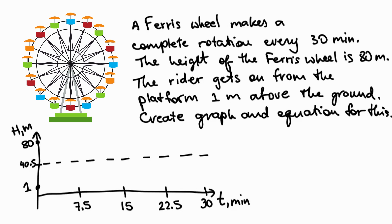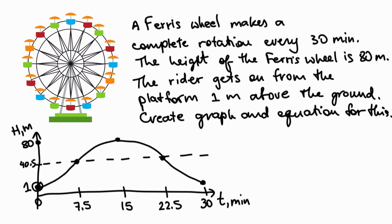The rider gets on at the bottom at time zero, so the lowest height is 1 meter. After 30 minutes the rider returns to the same position. The rider reaches the highest point at 15 minutes — halfway through — and is at the center of the wheel in between. It is convenient to express this model as a cosine function because cosine normally starts at zero-maximum; here we just reflect it so it starts at zero-minimum, with no phase shift.